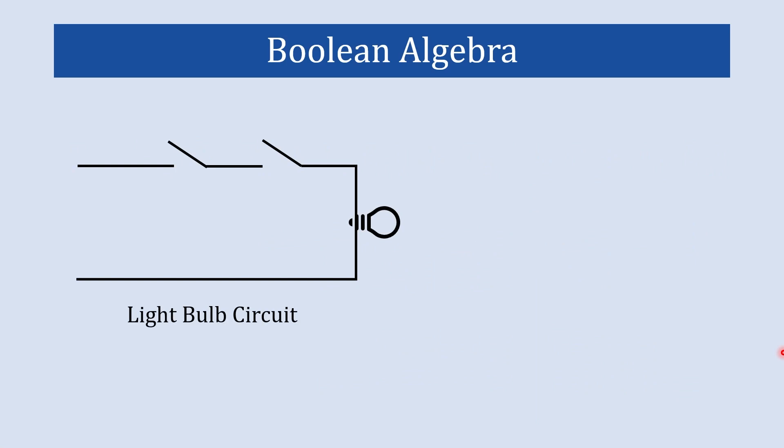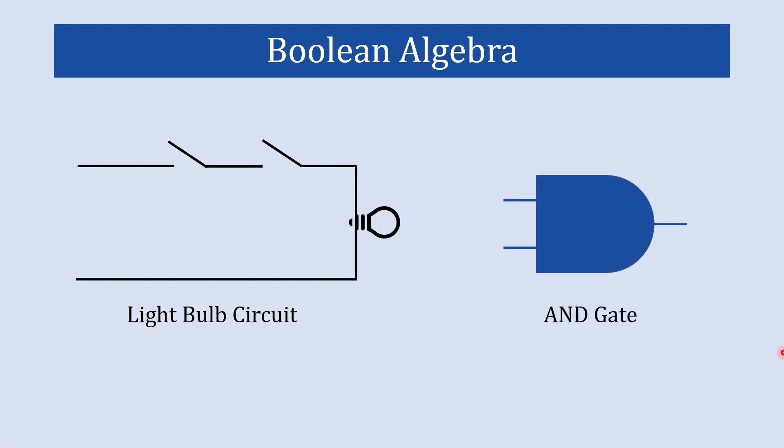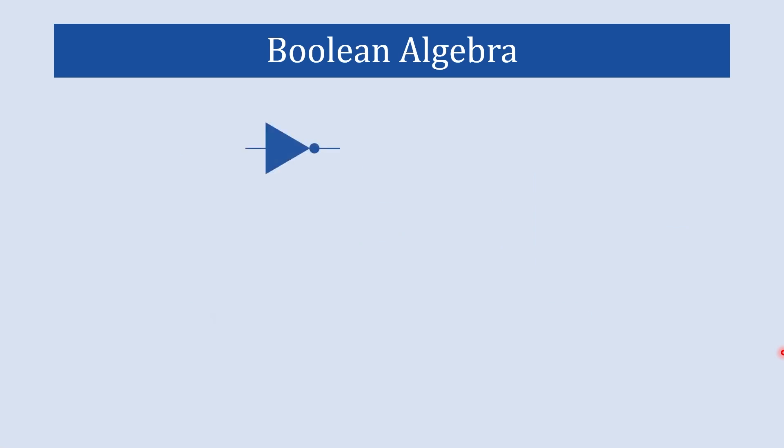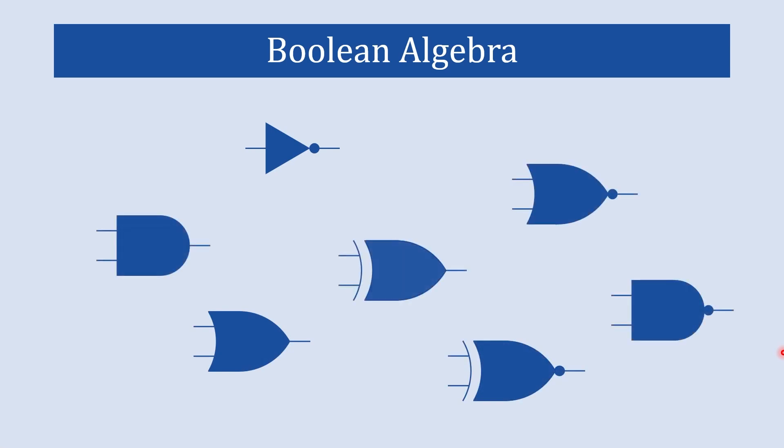For example, let's say we want to design a circuit that turns on a light bulb only when both switch A and switch B are closed. Using Boolean algebra, we can represent this logic as the AND operation of switch A and switch B. This simplifies the design process and ensures the desired behavior of the circuit.